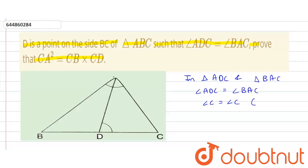Because angle C is common to both the triangles. Therefore, triangle ADC is similar to triangle BAC by AA criteria for similarity.